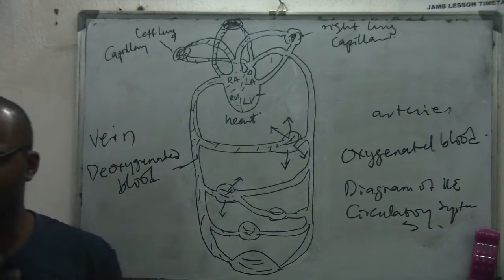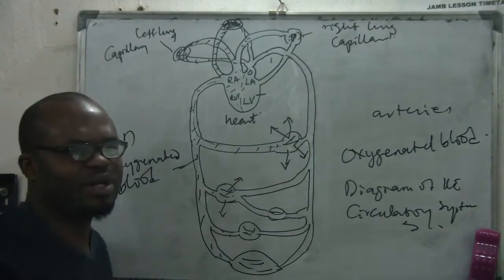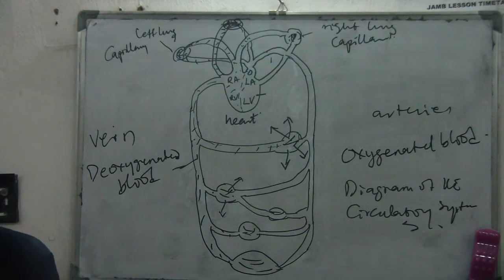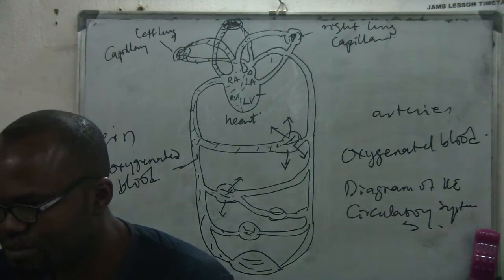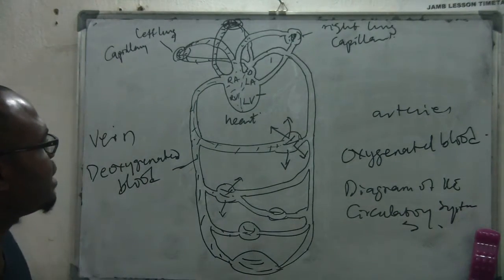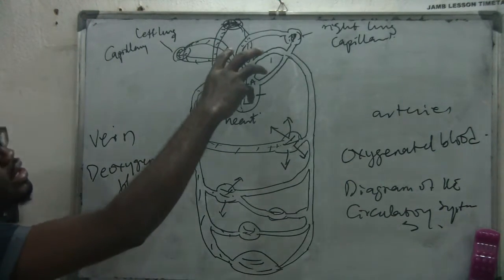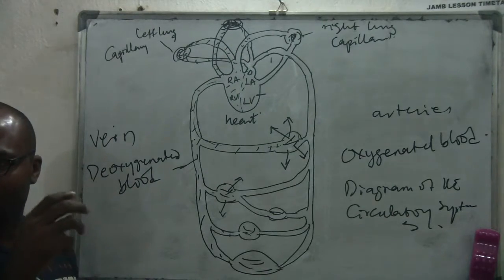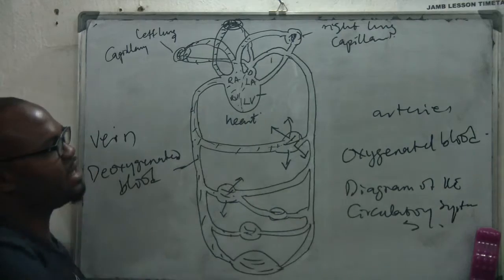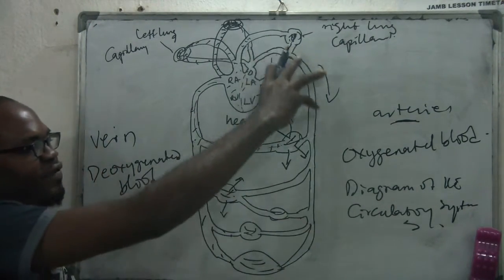When you get to the lungs, you see the left lung capillaries and the right lung capillaries. In the lung, you breathe in oxygen. What your body needs is oxygen mostly, though it also needs other things that the blood carries. When the blood is in the lung section, it becomes oxygenated blood — blood that has oxygen.